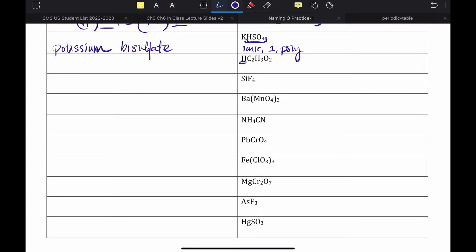Next one starts with H. Must be an acid. Has several elements. Must be an oxyacid. So, we will name it accordingly. This ion is called acetate. So, I will replace that with -ic. Acetic acid.